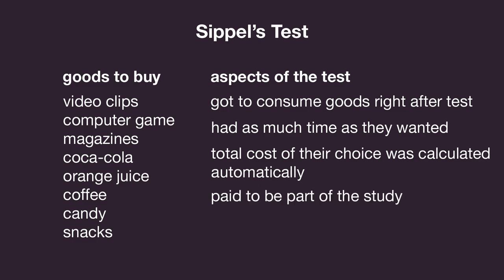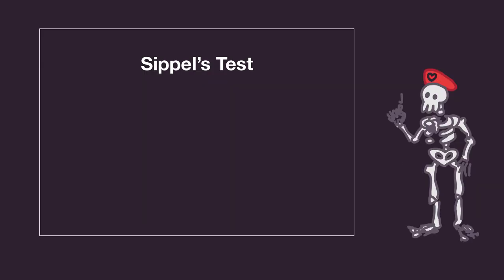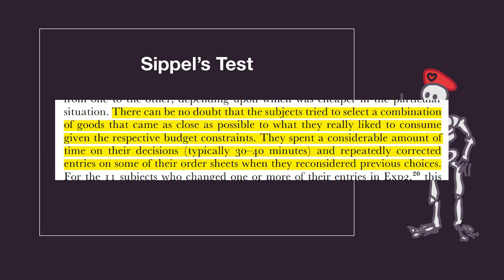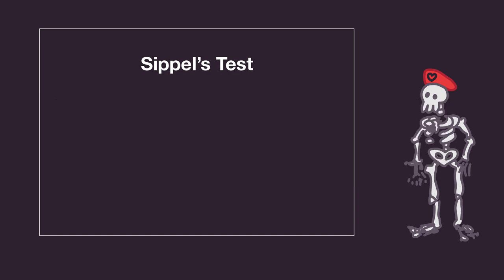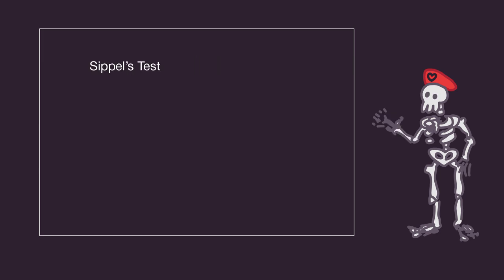They would just be given a budget, told the prices of the goods, and could spend as much time as they wanted to get their perfect combination, with the computer telling them how much they had spent and had left along the way. Then the prices were changed, and they did it all over again. They were also paid to be part of the study. Sippel is quoted saying, there can be no doubt that the students tried to select a combination of goods that came as close as possible to what they really liked to consume given their respective budget constraints. They spent a considerable amount of time in their decisions, typically 30 to 40 minutes, and repeatedly corrected their entries when they reconsidered previous choices.